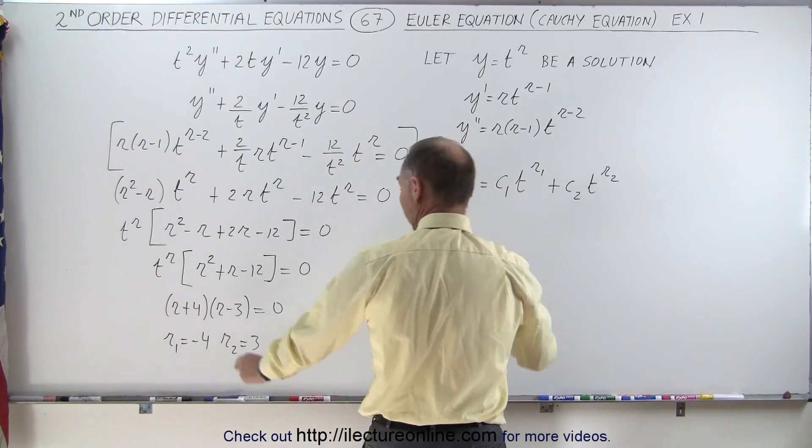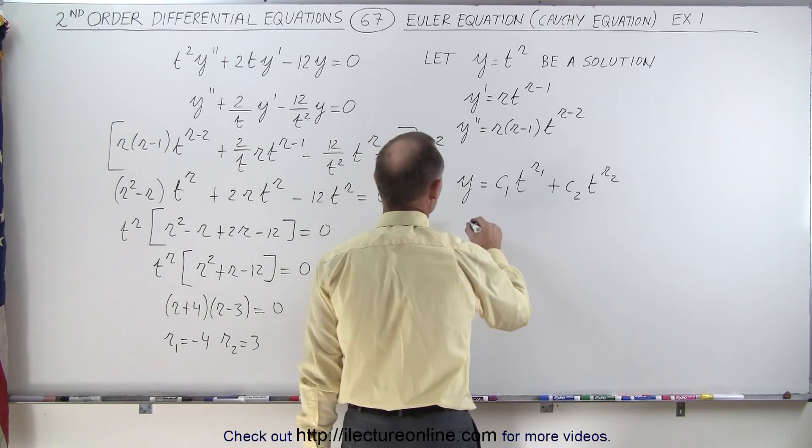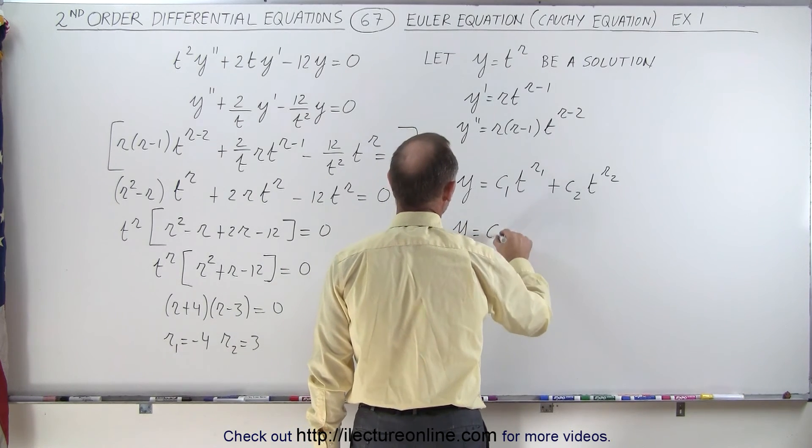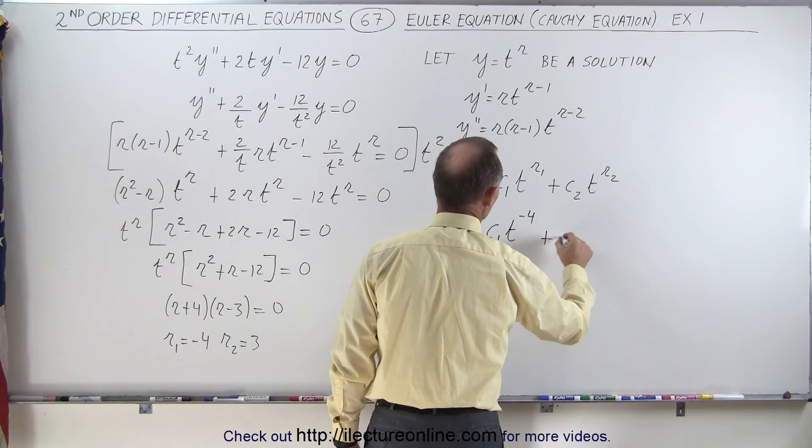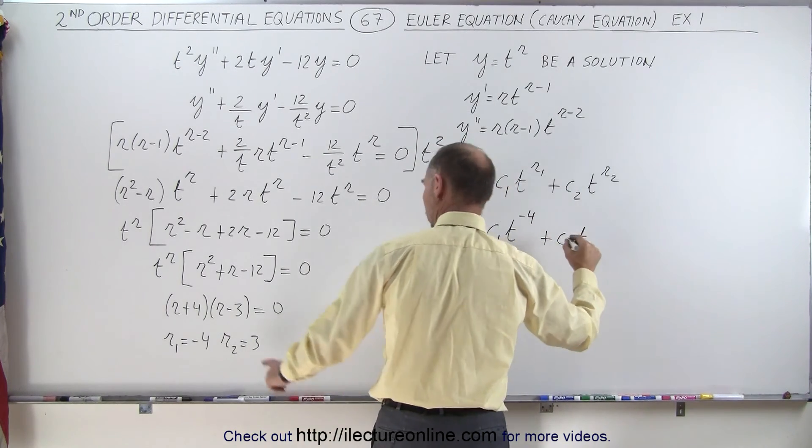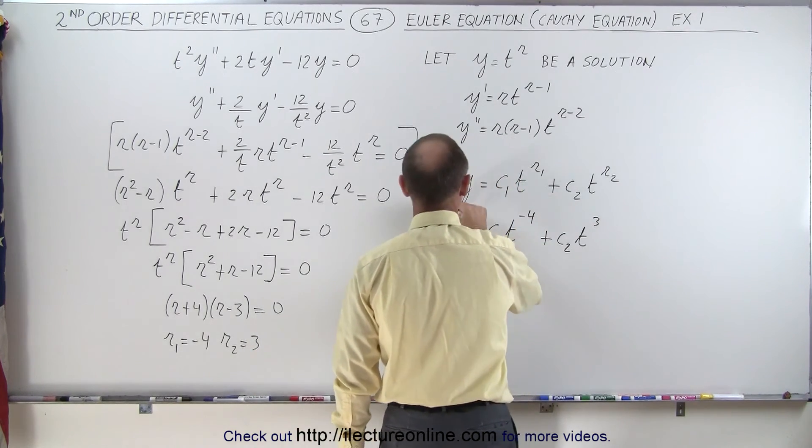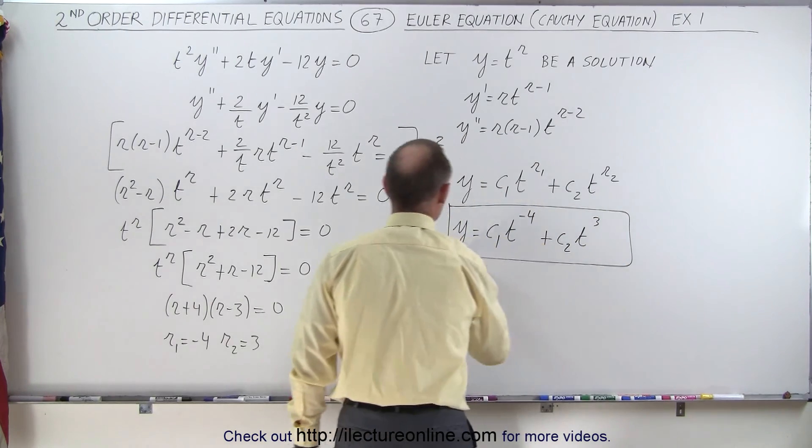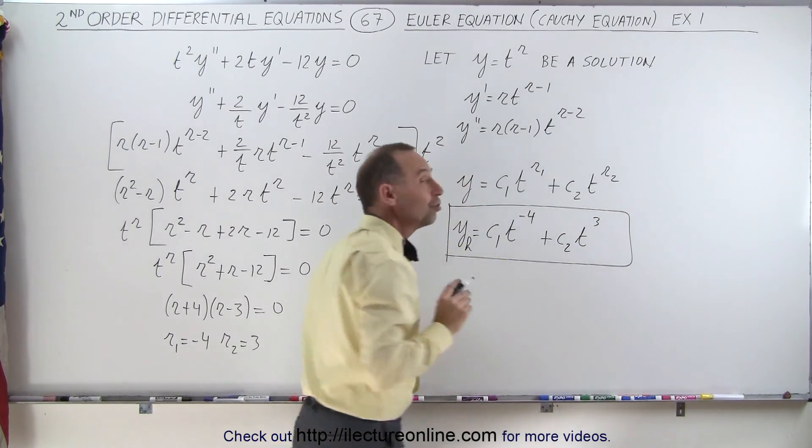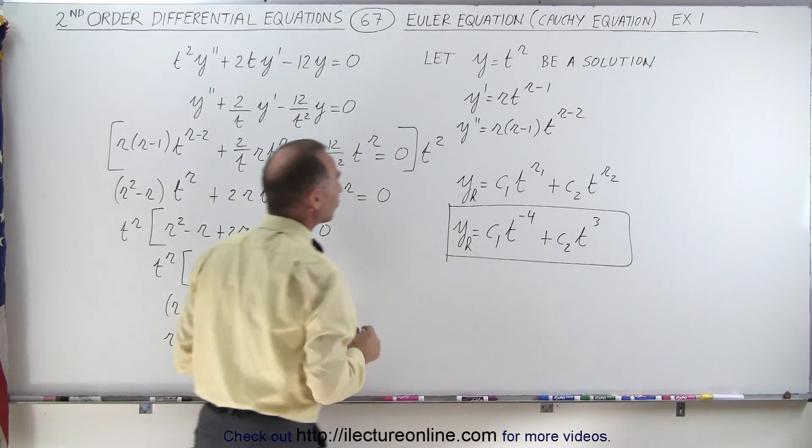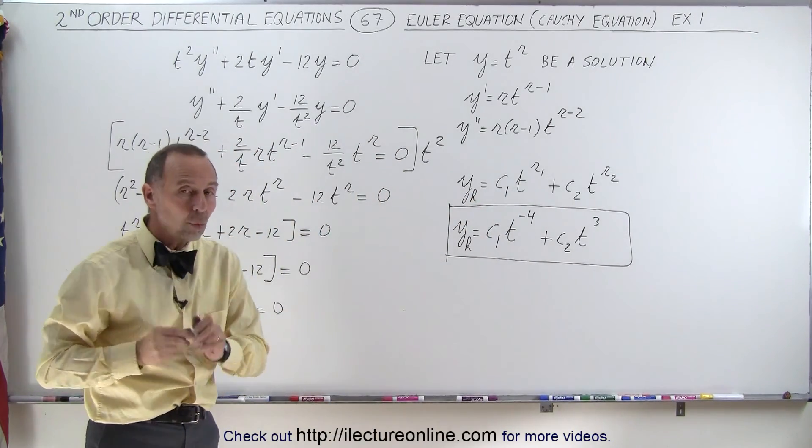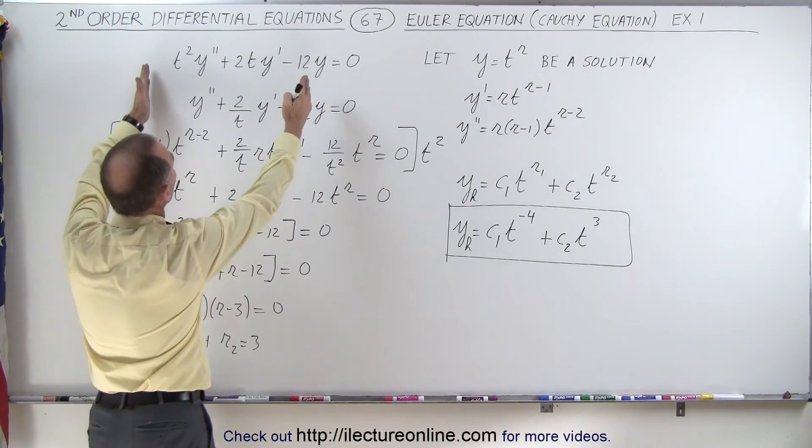And then since we know what the values of r are, we then know that y is equal to c₁t^(-4) plus c₂t³. And this here is the solution to the homogeneous part of the equation. So I probably want to put some h there to indicate that this is only the solution to the homogeneous part of the equation.